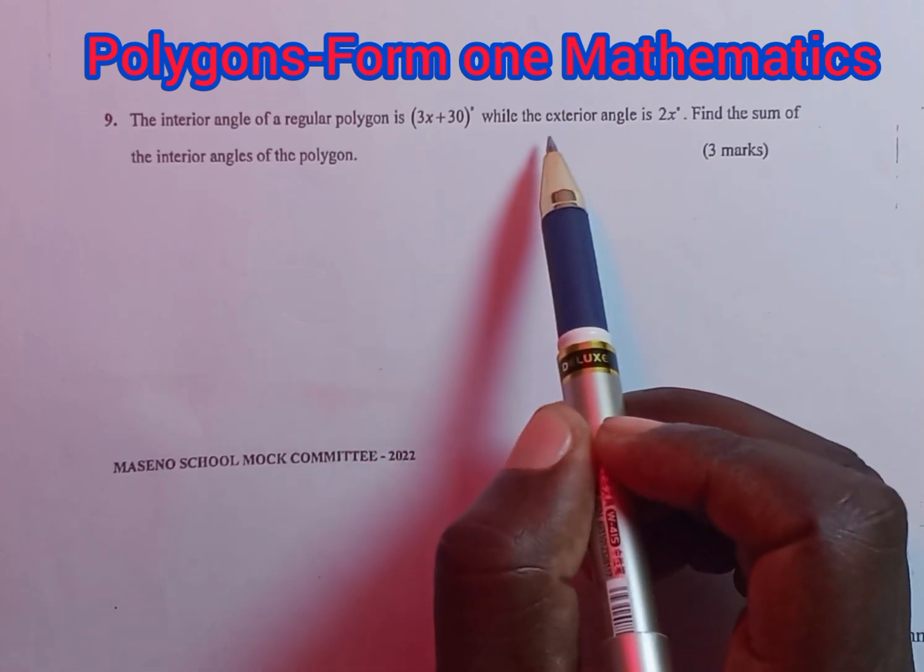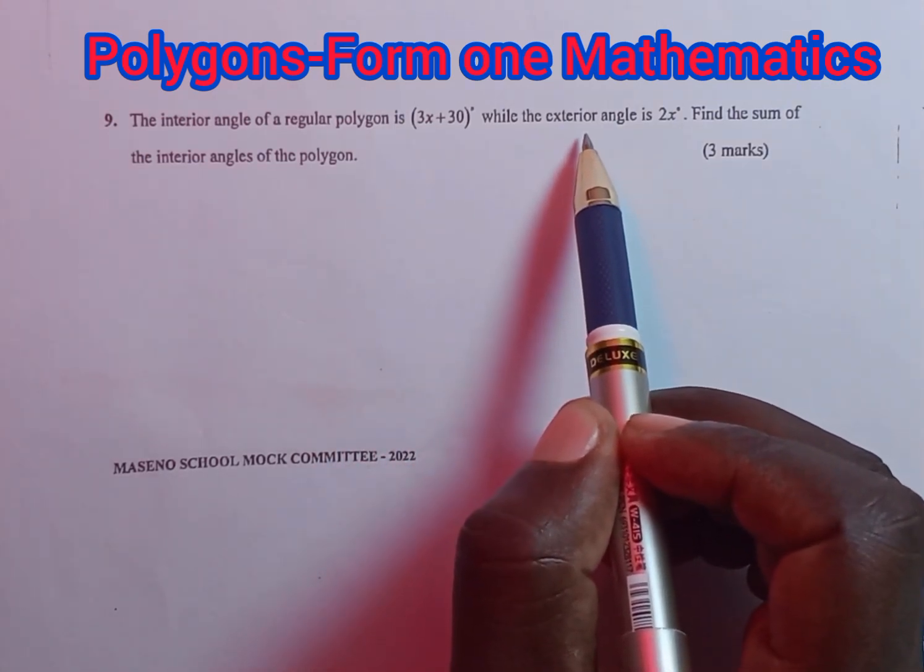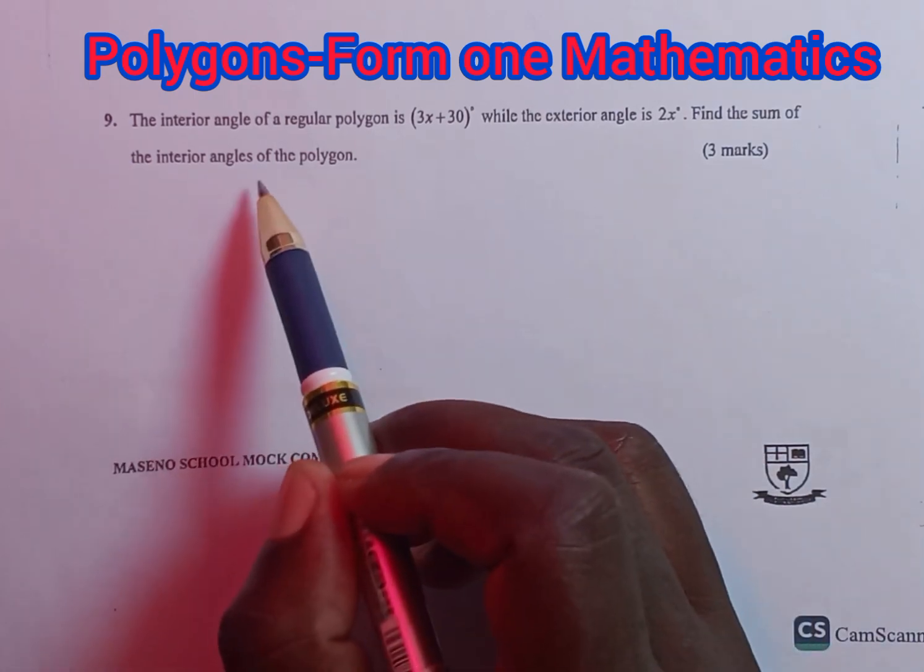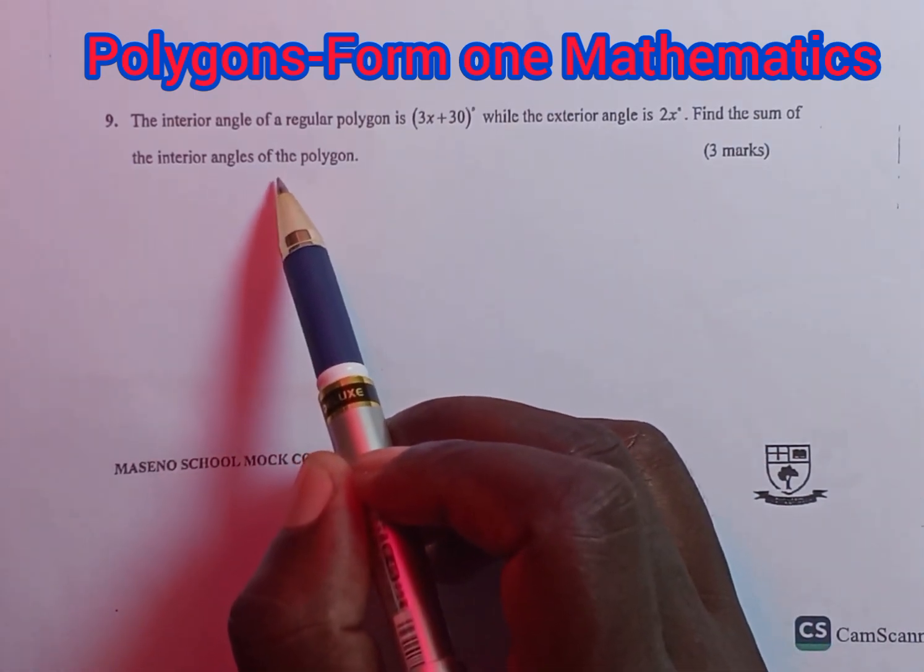while the exterior angle is 2x. Find the sum of the interior angles of the polygon.